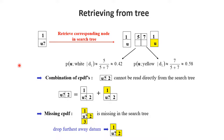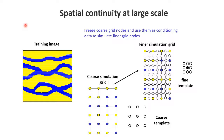For spatial continuity at large scale, with very large training images and large simulation grids, you may need very large templates to capture long-range continuity. This is handled by multiple grid simulation. We use a cascading set of grids — first simulating on a coarse grid with a fairly coarse template, say a three-by-three template. Once we have that coarse simulation, we paste those values onto the finer grid, so large-scale continuity is already informed. We then use a fine-scale template to complete the simulation.